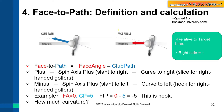Definition and calculations. Both club path and face angle are defined relative to the target line — this is the TrackMan definition. Right side is plus, and left side is minus.